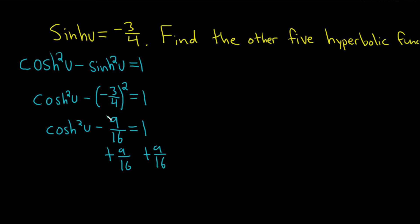When you're adding these, you want to think of 1 as 16/16. That way you can add the fractions, because that way the denominators are the same. So you end up with cosh²(u). 16 plus 9 is 25, so you get 25 over 16.